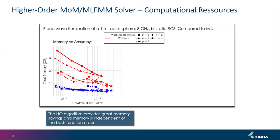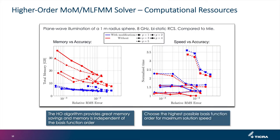Why bother with orders higher than 2? When we look at speed versus required accuracy, the higher the order the better the speed. The optimal choice is definitely the highest possible order — fast solution with memory not compromised. Overall, the high order MLFMM solver works very well for electrically large structures with very large patches.